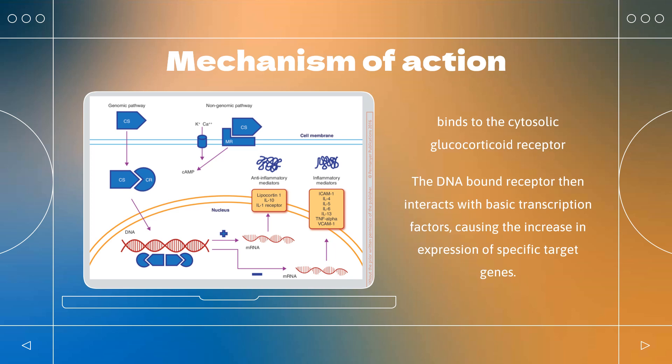GRE in the promoter region of the target genes. The DNA-bound receptor then interacts with basic transcription factors, causing the increase in expression of specific target genes.